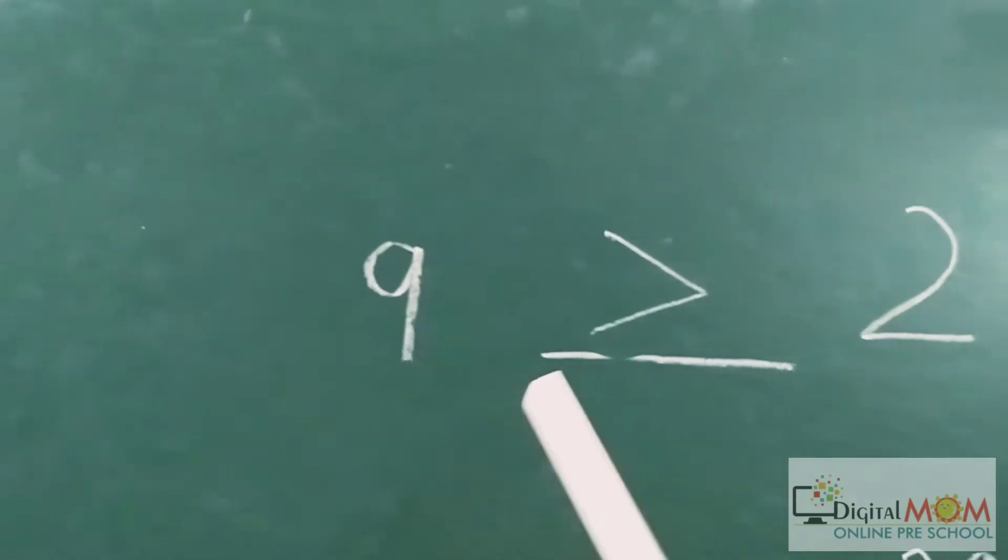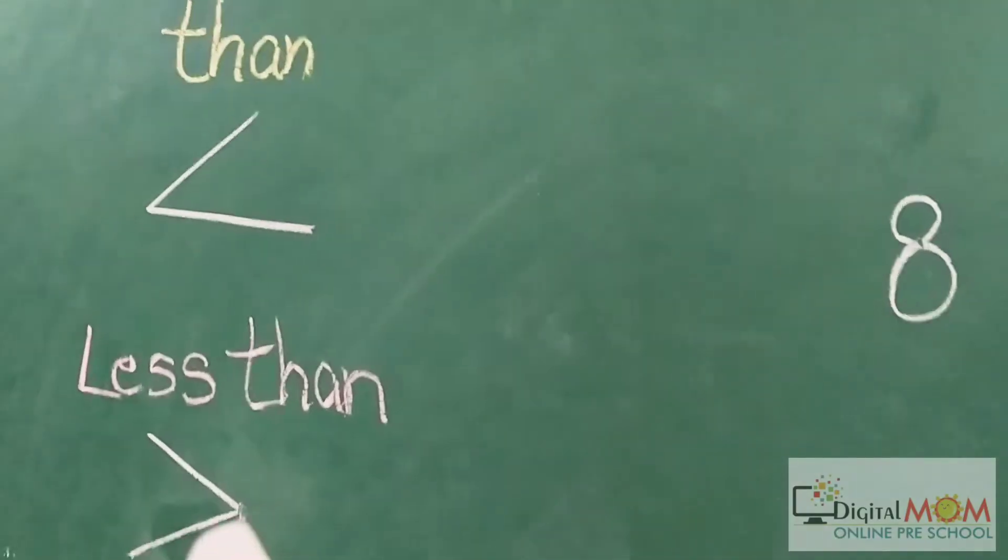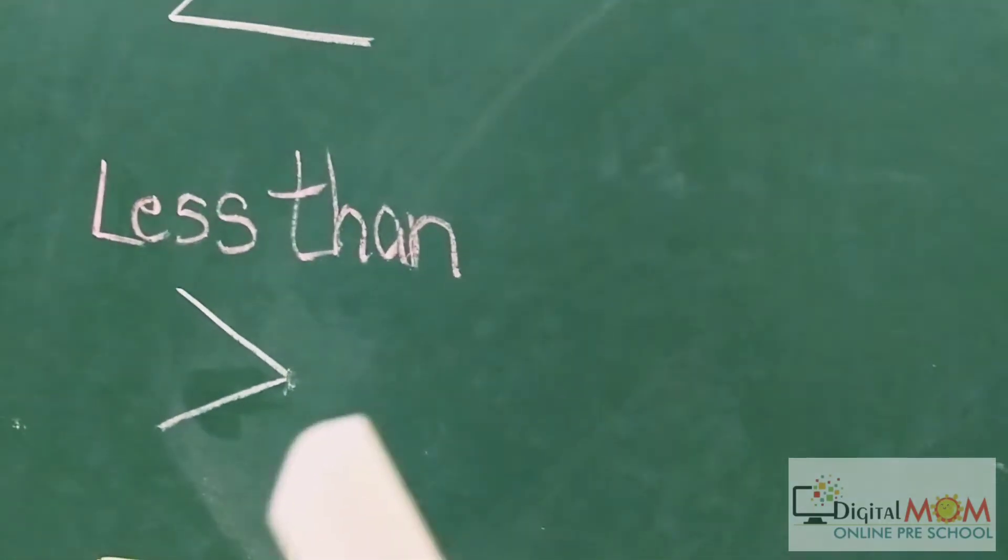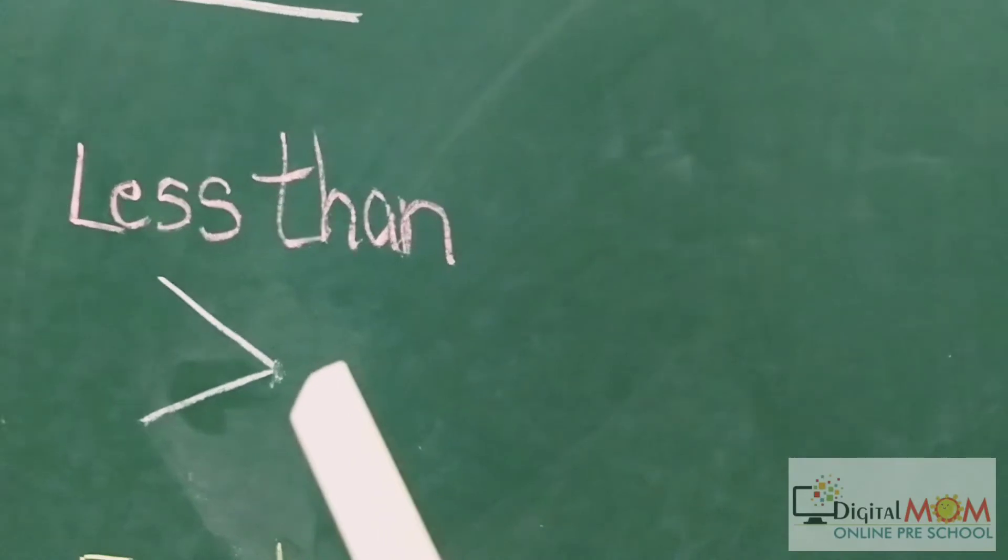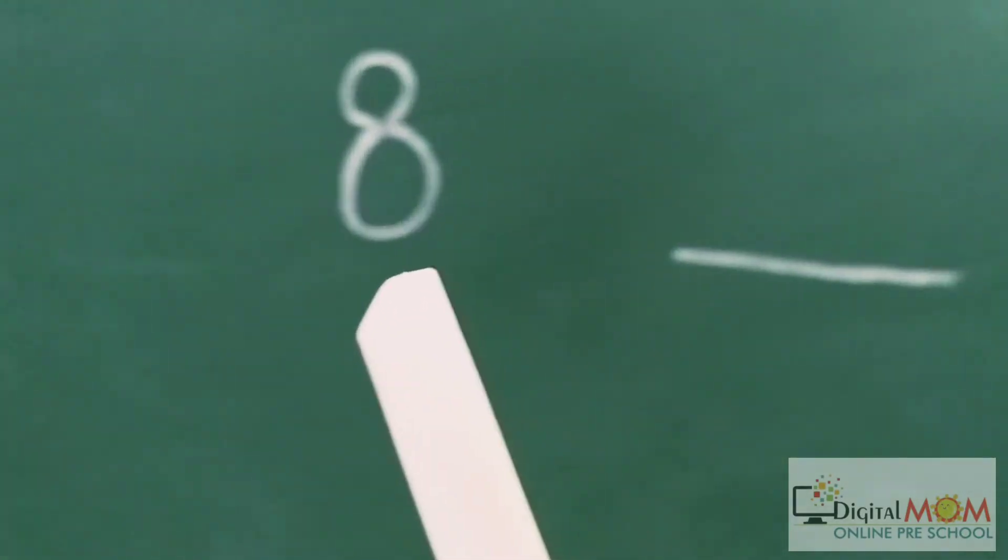Now next question is less than. We have to show the tail of the alligator to the lesser number, and our numbers are...